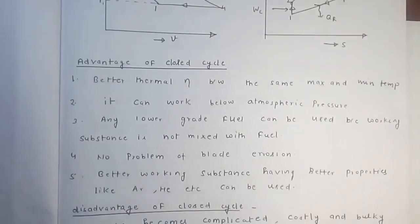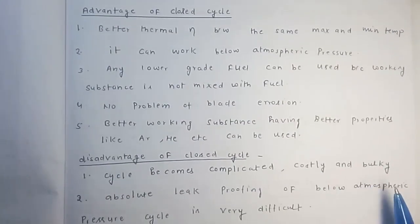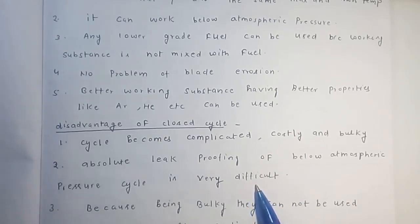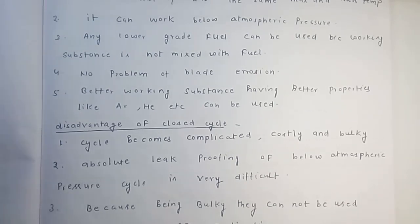To remember the disadvantages of closed cycle: one component is added, making it complicated; absolute leak proofing is required for below atmospheric pressure operation, which is difficult; and adding a heat exchanger requires cooling water for heat exchange, making the entire system bulky and complicated. In an open cycle, exhaust is simply released to the atmosphere, eliminating the need for cooling water, heat exchanger, and intercooler.